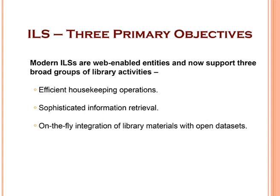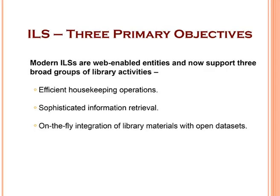An integrated library system basically performs three kinds of jobs. First, efficient housekeeping operations. Second, sophisticated information retrieval. Third and most important, with the advent of present web technology, is the on-the-fly integration of library automation with different open datasets. For example, by entering a few MARC records based on title and ISBN matching, the system can fetch cover images from Amazon, table of contents from the Library of Congress CADD directory, and user reviews from Amazon and other free open data providers.